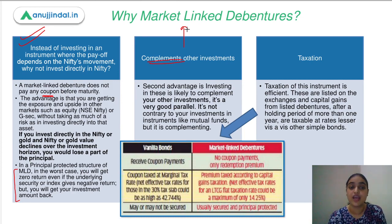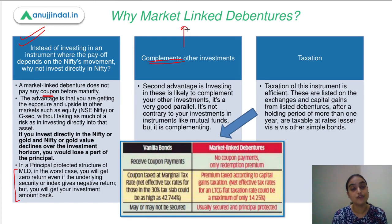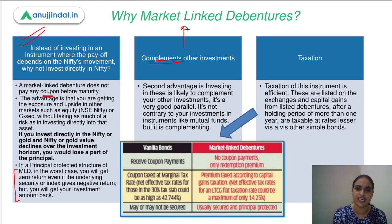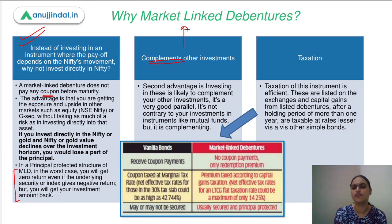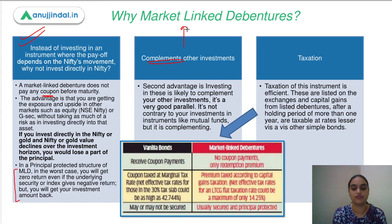Thirdly, taxation. If you invest in simple vanilla bonds, you pay tax based on your tax slab rate — around 42% including additional taxes for high earners. But for market linked debentures, around 14–15% tax comes up because they are taxed according to capital gains taxation. That is why these products are quite preferred by wealthy investors.